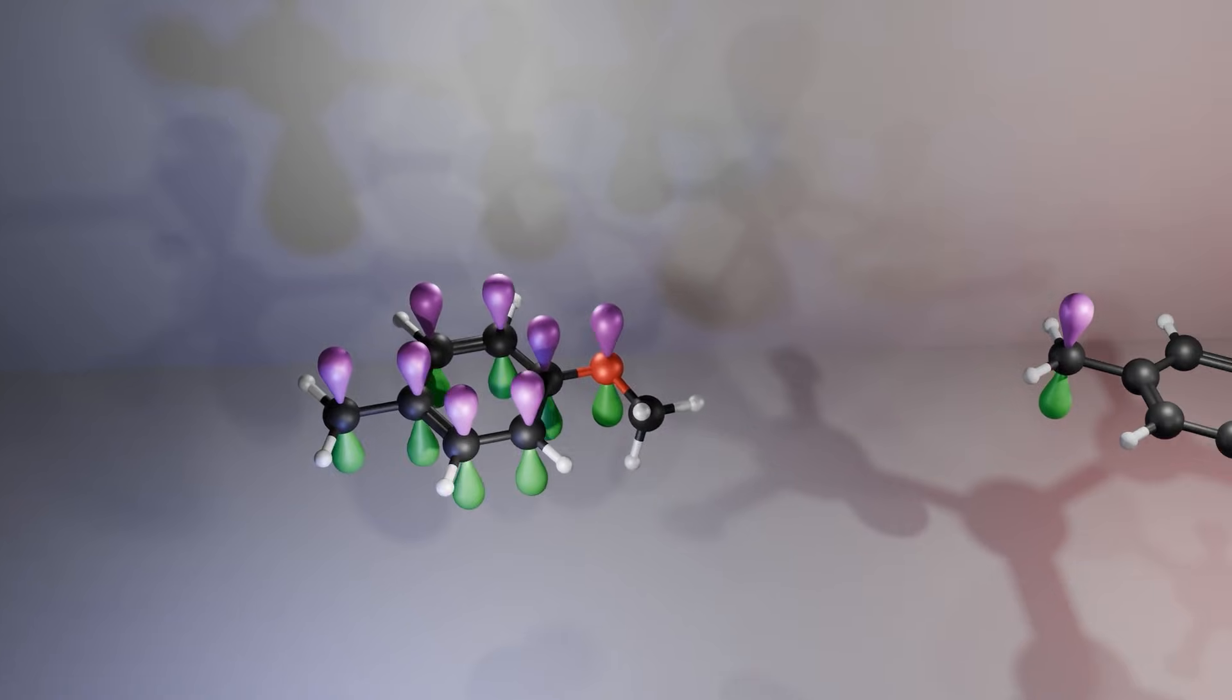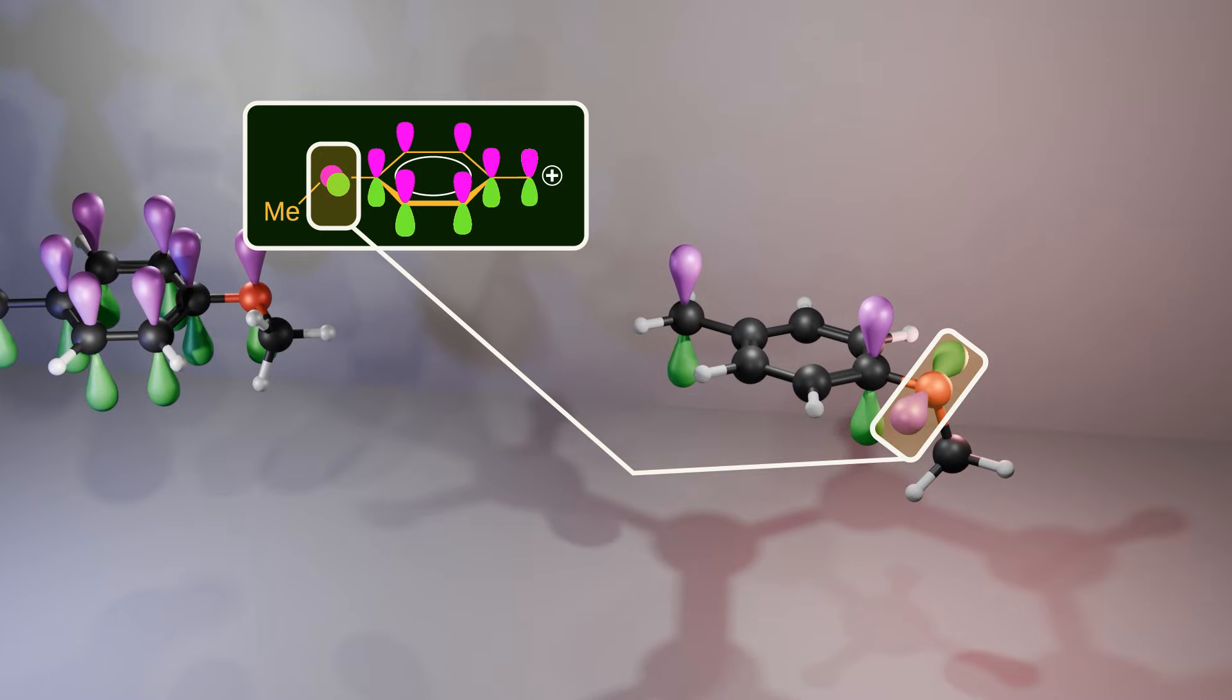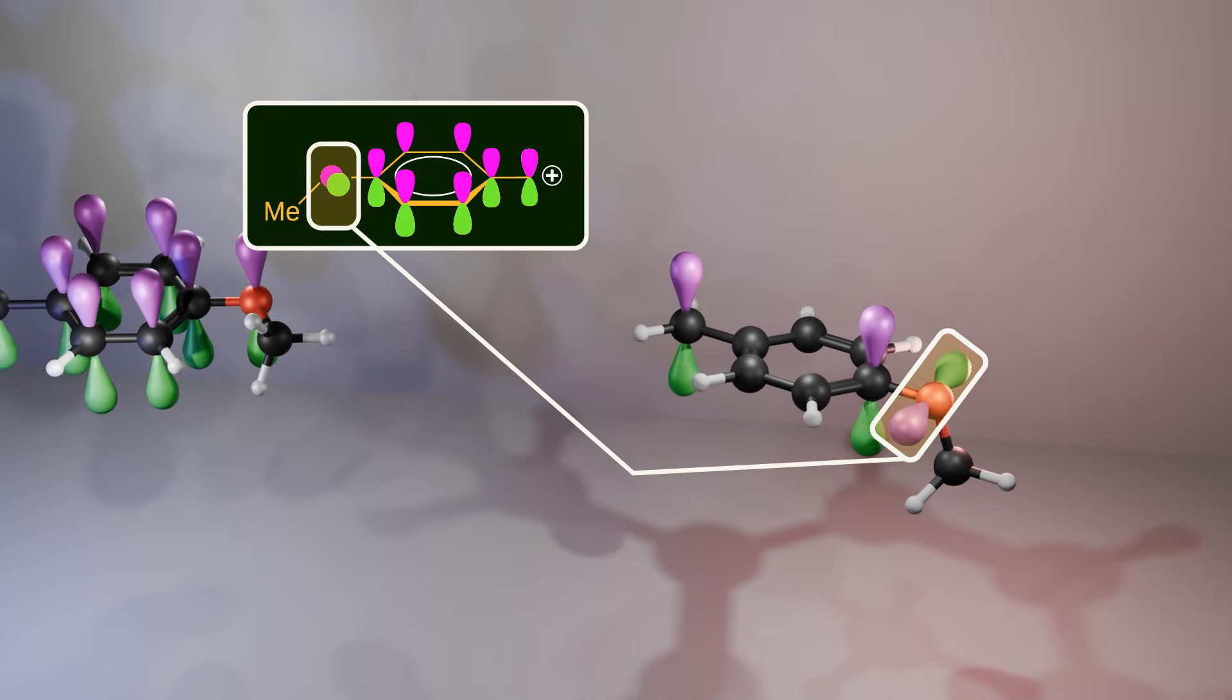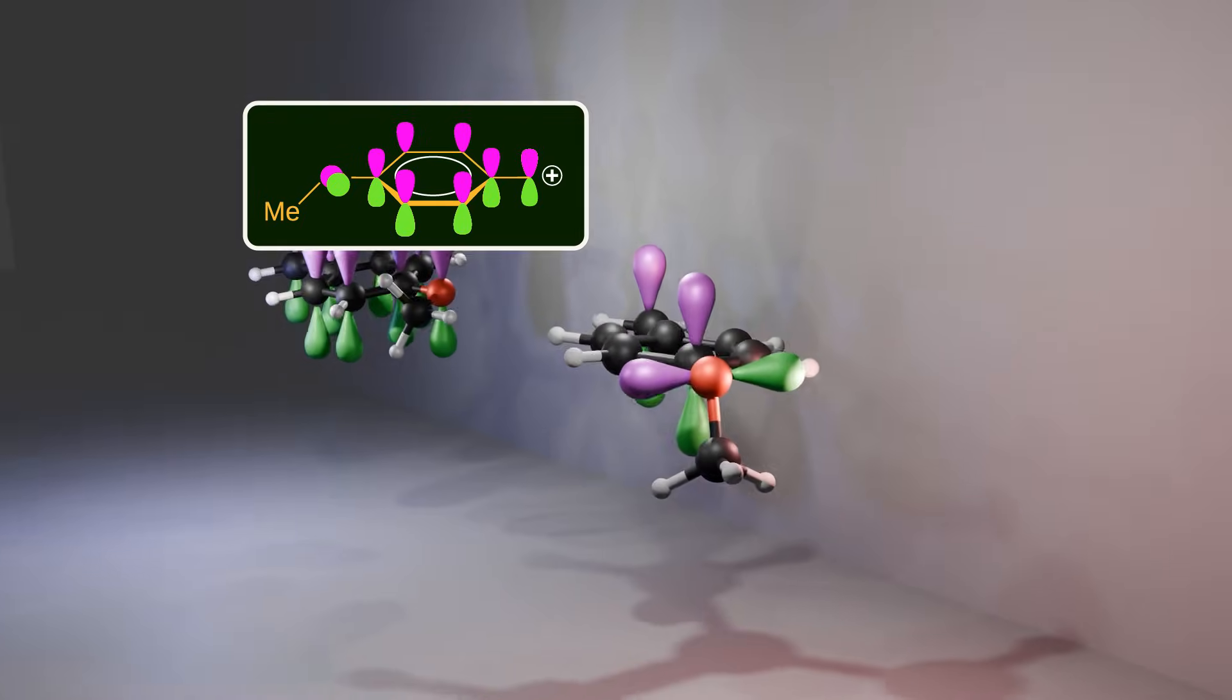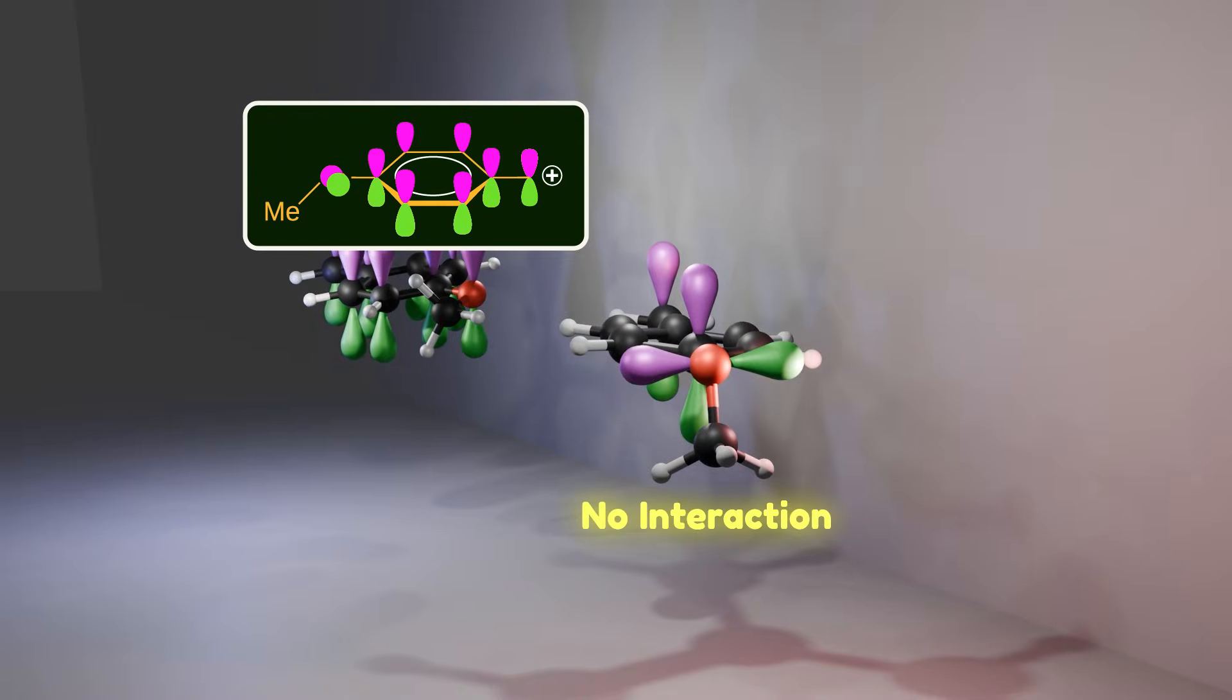Having said that, in perpendicular conformation, the p-orbital that holds the non-bonding electrons is perpendicular to the phenyl ring, so there is no interaction.